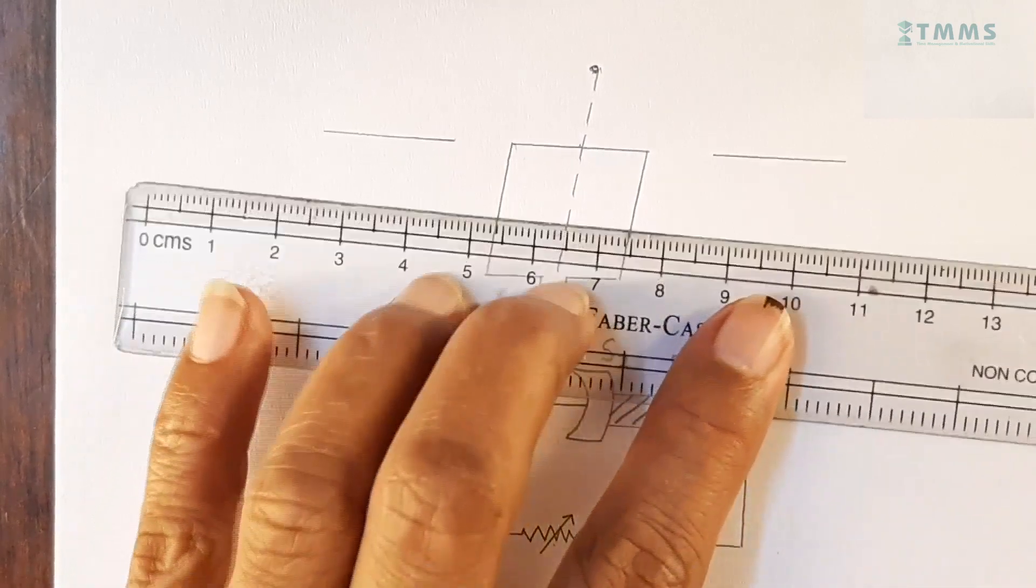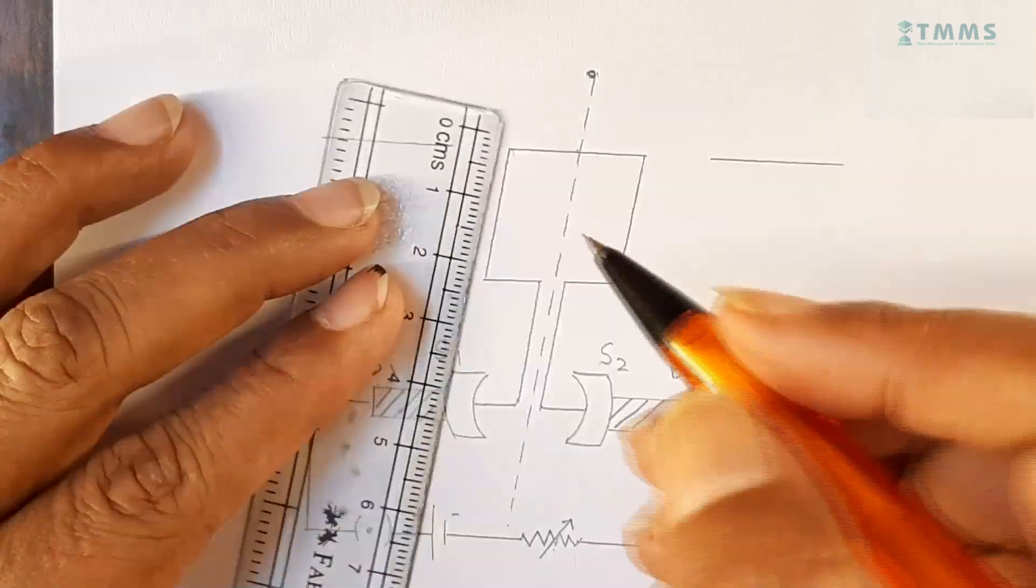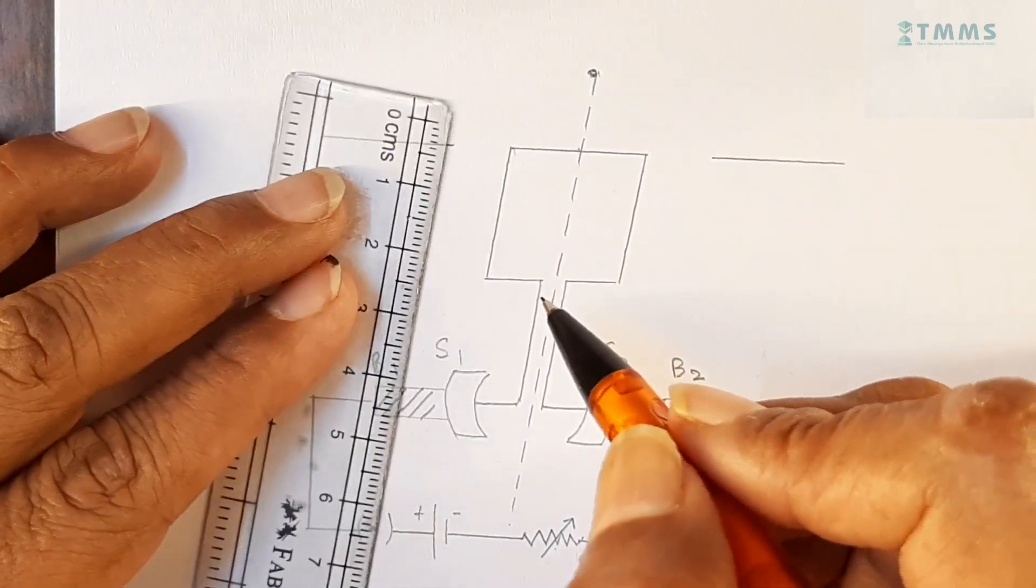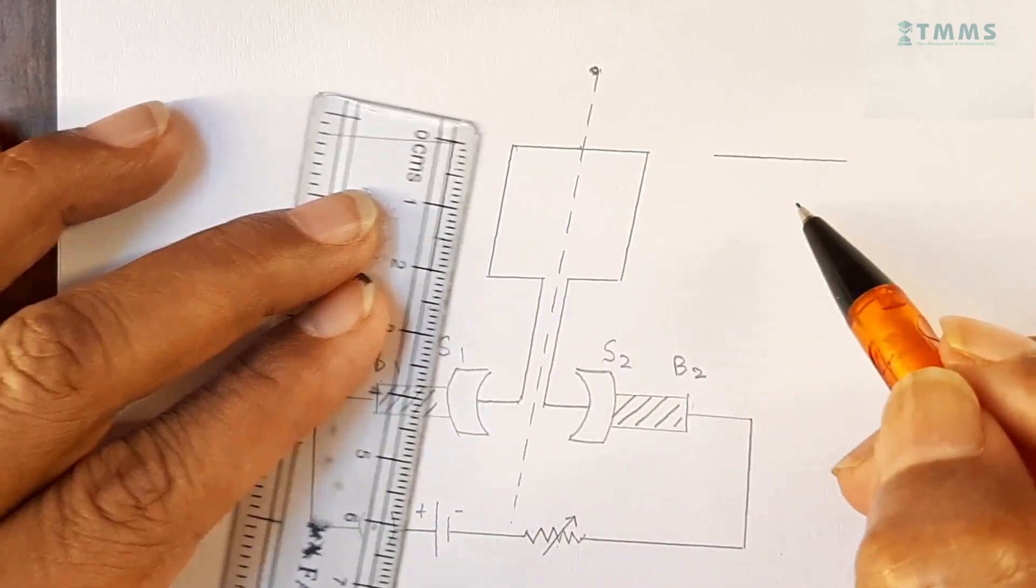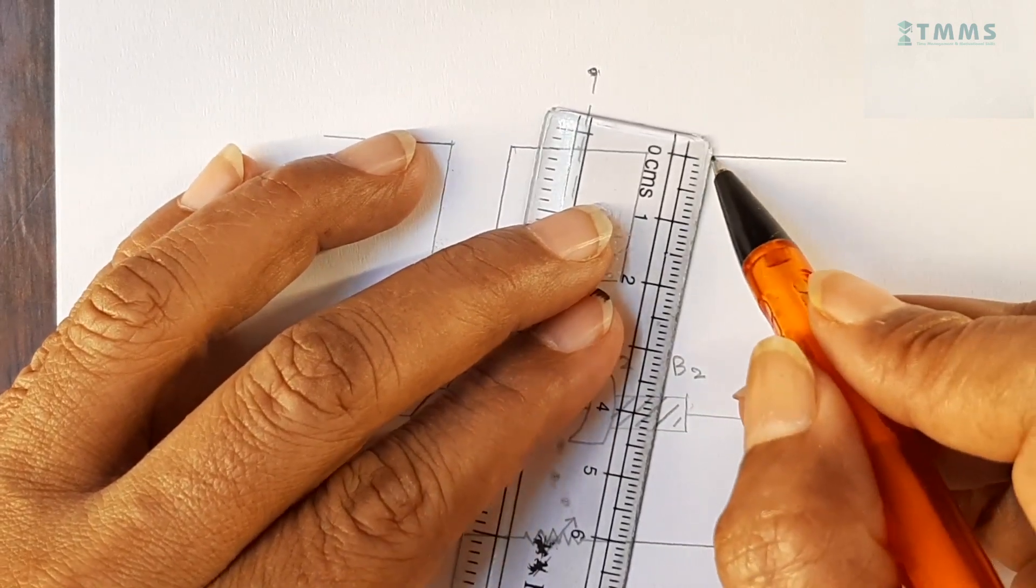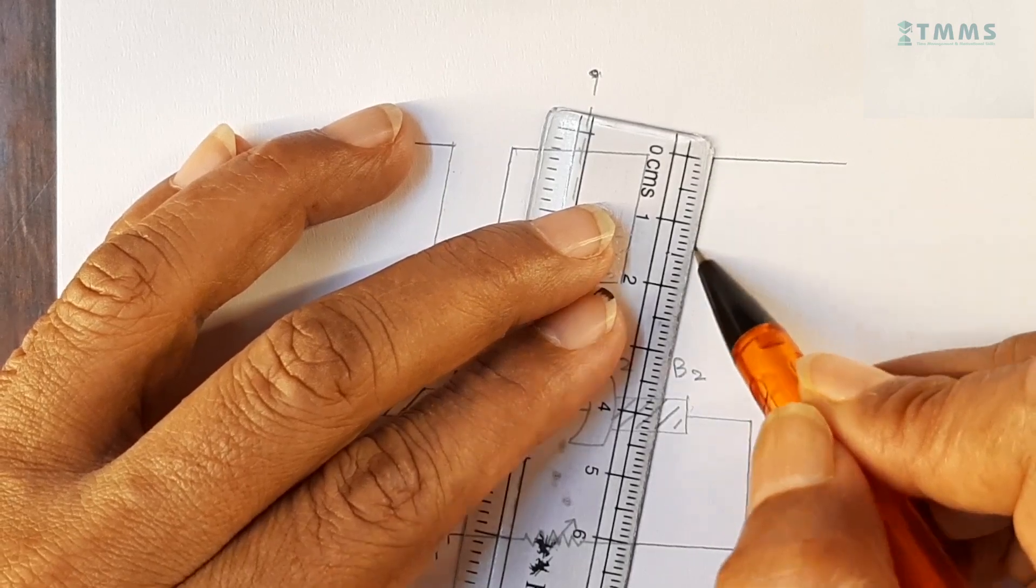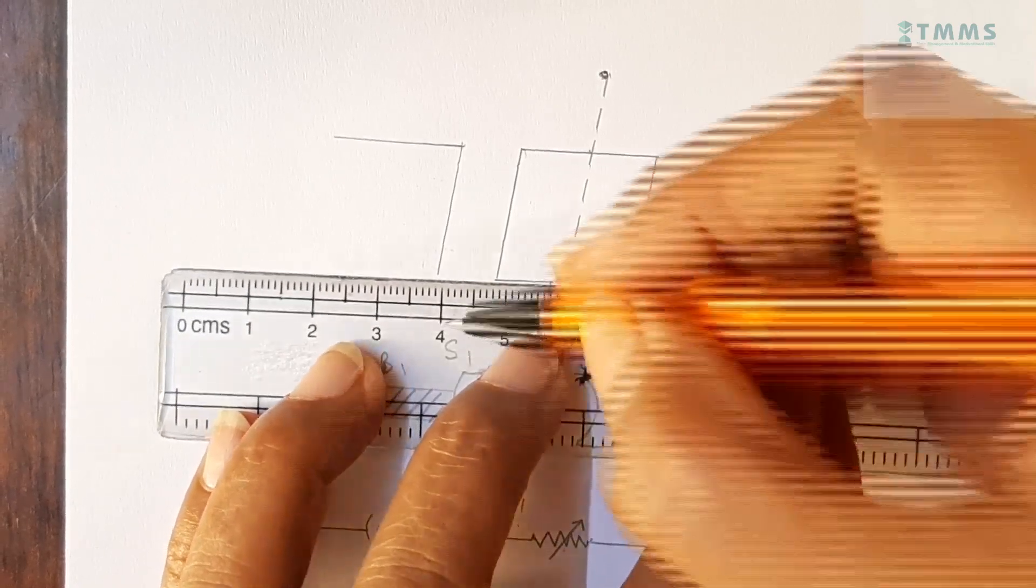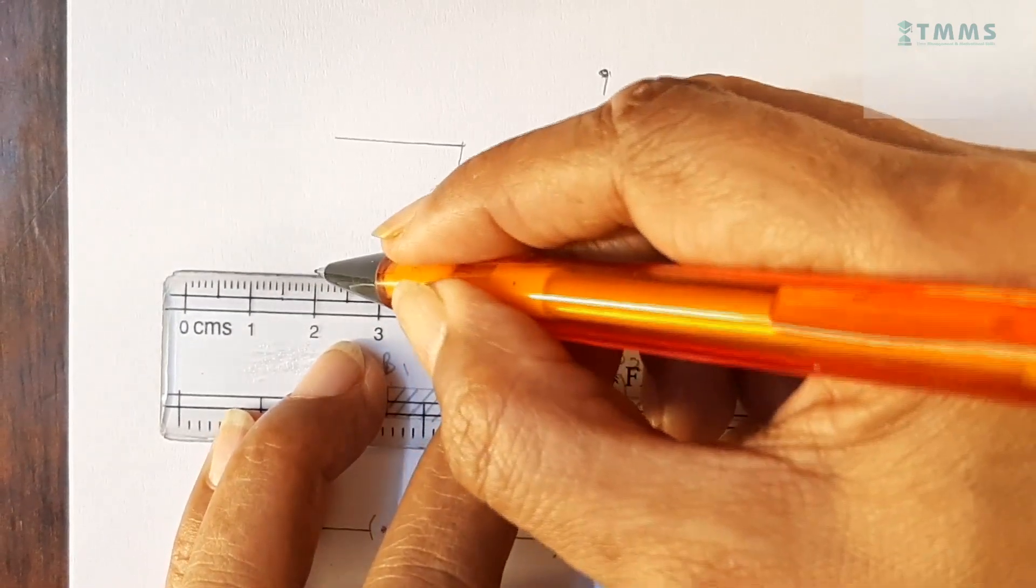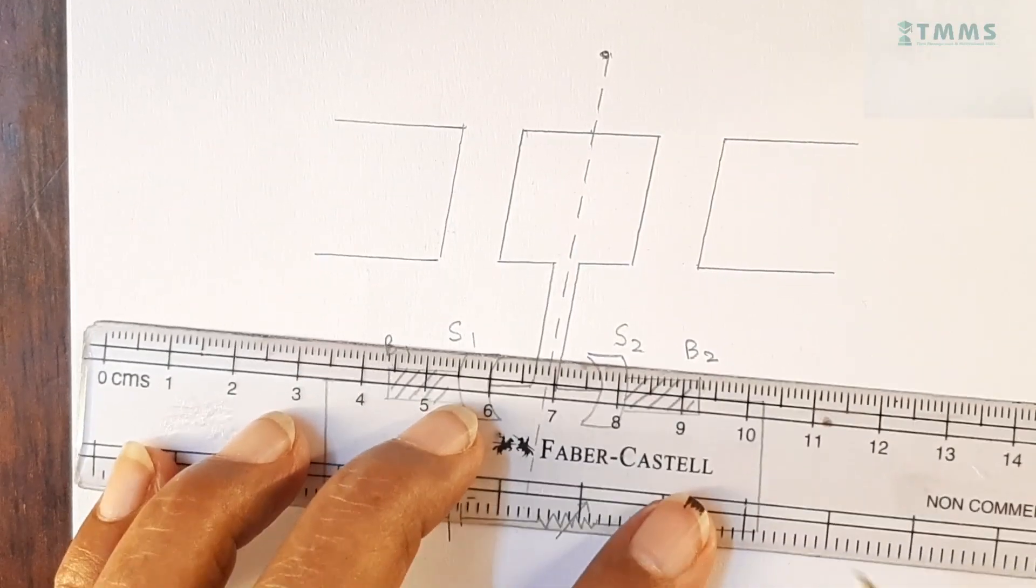And now, we go towards the magnets. Now, these magnets we have drawn. For the magnets, we will draw a line parallel. Again, 2 centimeters this way. And here also, we will take 2 centimeters this way. Make sure that it is parallel to this. Just slide the ruler. And then, from here to here, you take 2 centimeter. From here to here, take 2 centimeter.